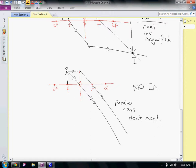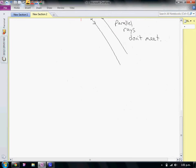So, no image. Even if you backtrack, the backtracks never meet so you can't get an image. You can't project anything on a screen. It's not a virtual nothing. It's just a nothing. And last one. This is the exciting one.